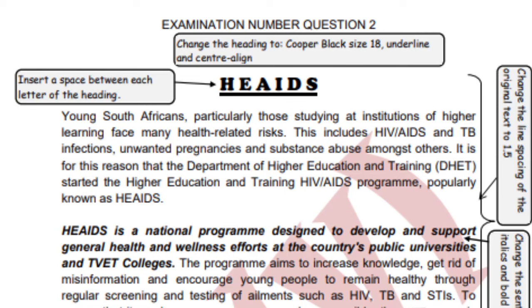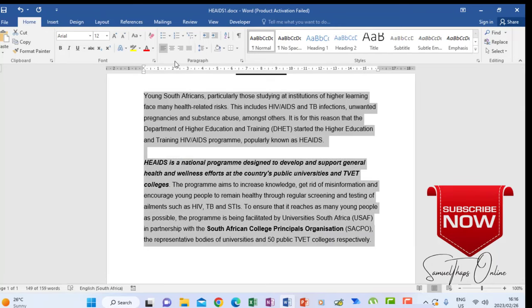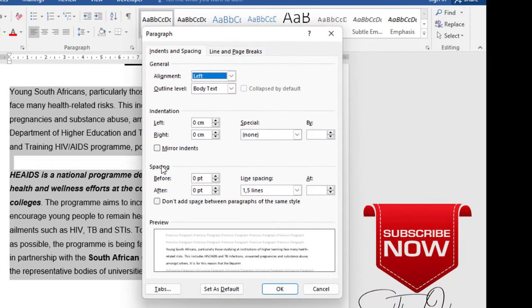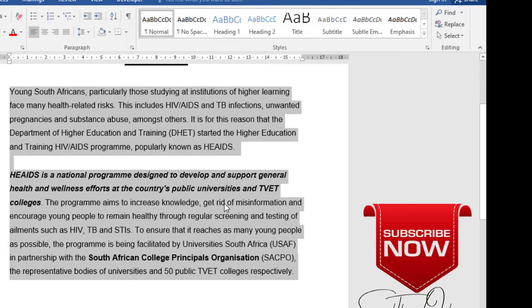I've inserted a space between each letter of the heading. Now, they say that I have to change the line spacing of the original text to 1.5. So meaning that everything must change to 1.5 line spacing. So I will highlight everything there, then I will go to the paragraph group, and then you will see the spacing there — line spacing is 1.5. Make sure that before and after it's always 0. So when I click OK, my line spacing is 1.5.